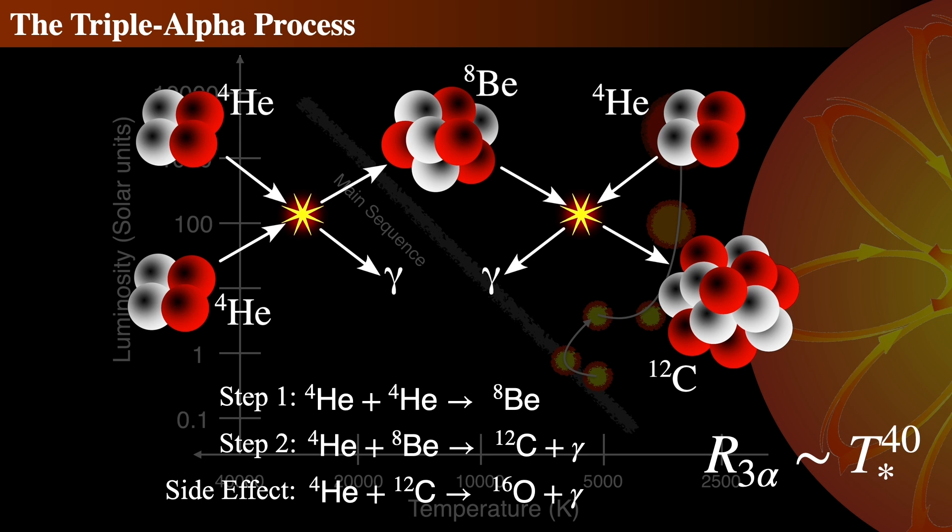This first reaction is endothermic, meaning it takes energy to do. So, in addition to being a huge electrostatic barrier to overcome, there's a need for additional kinetic energy from the nuclei to create that beryllium nucleus. That kinetic energy comes from the high temperature of the nuclei as a gas.